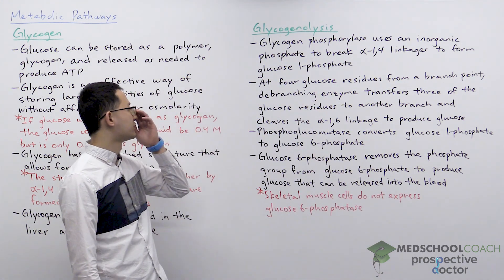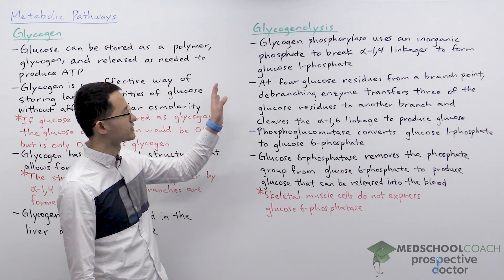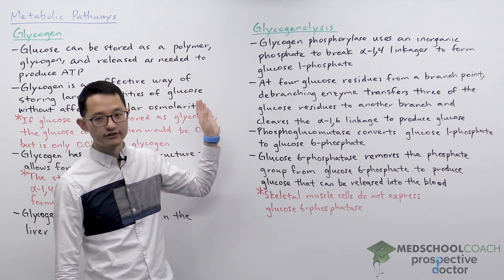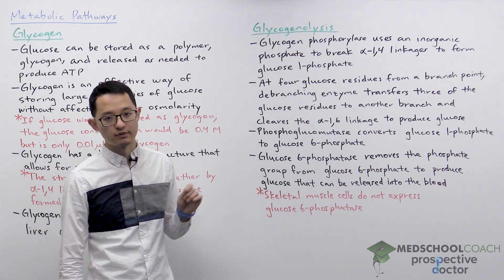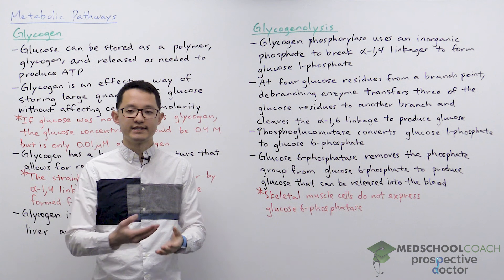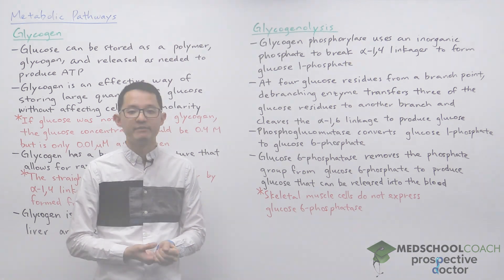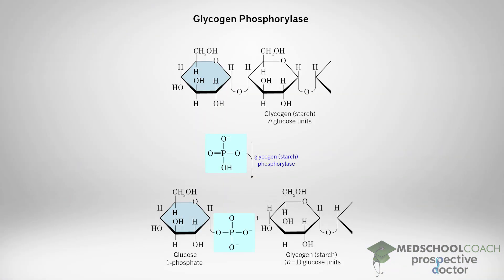Let's now look at glycogenolysis, which is the process of breaking glycogen down into glucose monomers. In this diagram you can see the first enzyme involved, which is glycogen phosphorylase. As a phosphorylase enzyme, glycogen phosphorylase will use an inorganic phosphate to break the alpha-1,4 linkages to form glucose-1-phosphate.